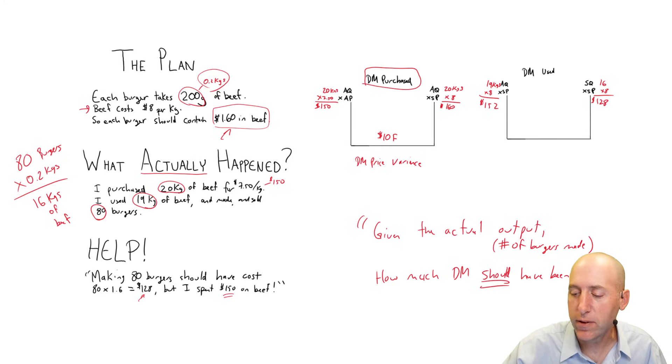So what's the difference here? 152 minus 128. The difference is $24. Is this variance favorable or unfavorable? Well, the price is the same between the two, but the quantity is different. I used 19 kilograms to do work that should have taken 16 kilograms. This is an unfavorable variance. I overused the beef. This is a direct materials quantity variance.